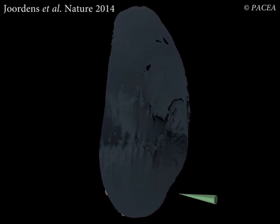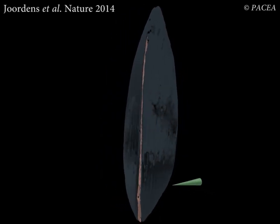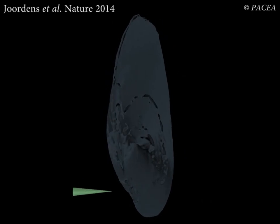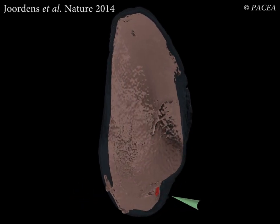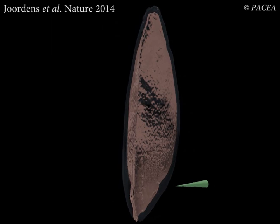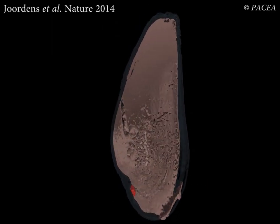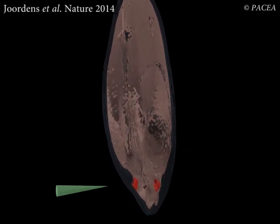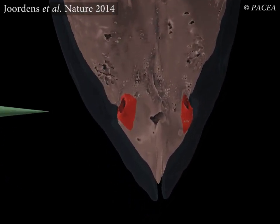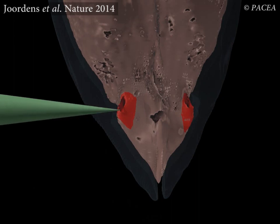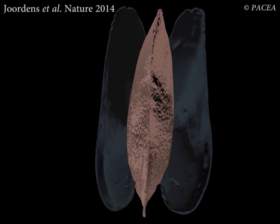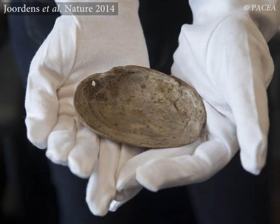A pointed object such as a shark tooth, employed with a rotating motion into the living shell at the location of the anterior adductor muscle, produces a hole similar in size and morphology to the holes from trineal. As soon as the shell is pierced and the muscle has been damaged by the tool tip, the animal loses control of the muscle, the valves part, and the shell can be opened without breakage.